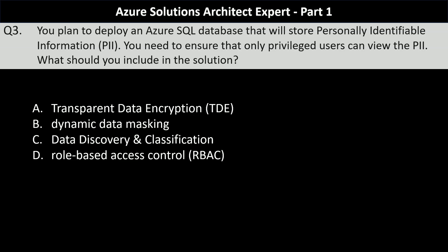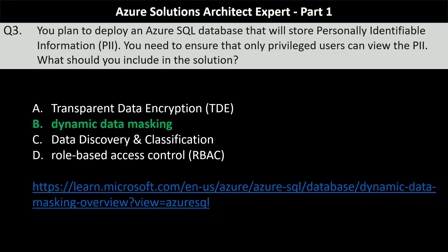You should include dynamic data masking in your solution to ensure that only privileged users can view personally identifiable information in Azure SQL database. Dynamic data masking helps prevent unauthorized access to sensitive data by enabling customers to designate how much of the sensitive data to reveal with minimal effect on the application layer. It is a policy-based security feature that hides sensitive data in the result set of a query over designated database fields, while the data in the database is not changed.